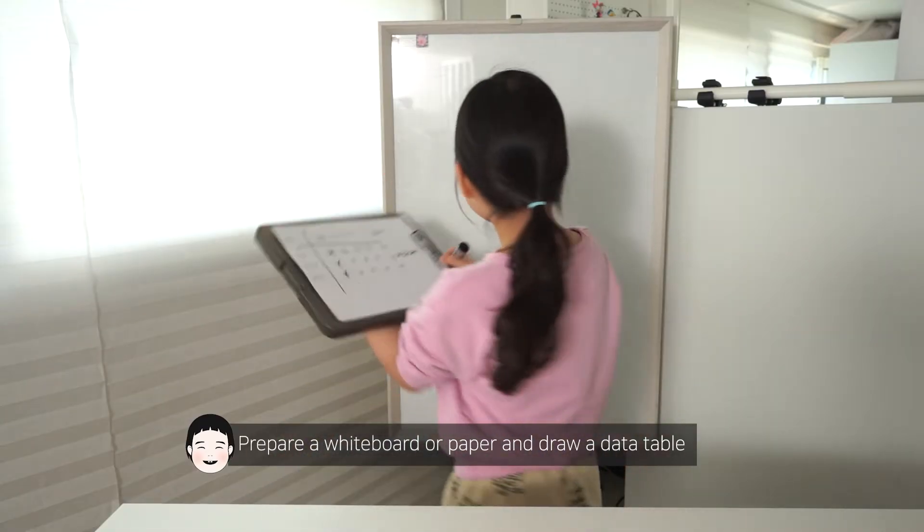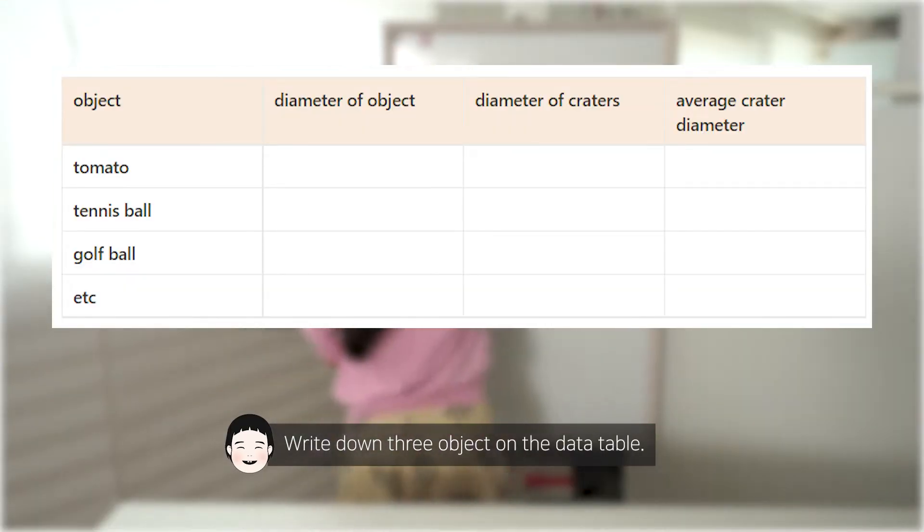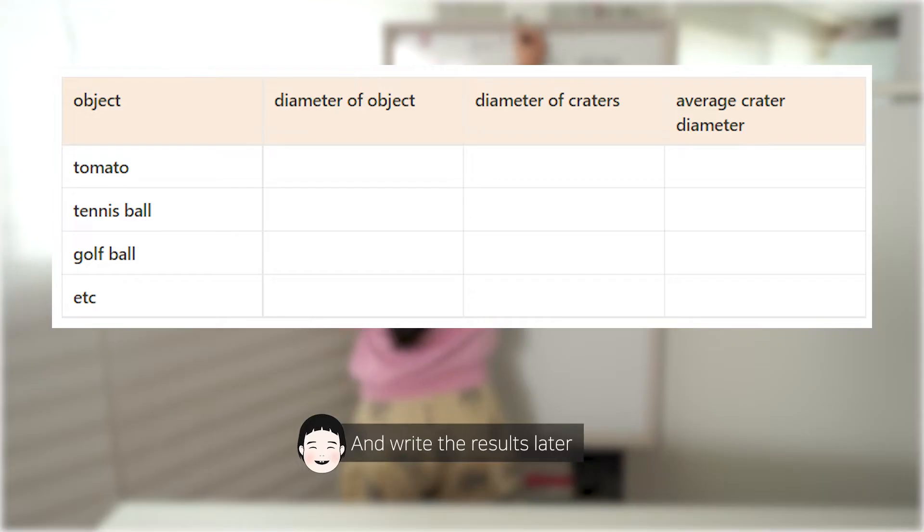Prepare a whiteboard or paper to draw a data table. Write down the three objects on the data table and write the results later.